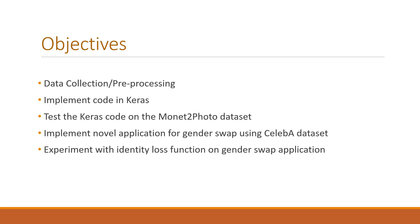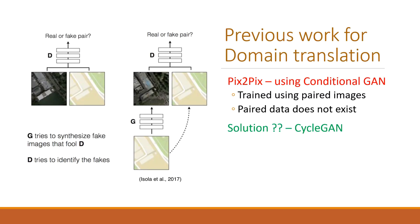In order to achieve our target, we start with collecting data from the CelebA dataset. Next we program our code in Keras. After that, we test it on the Monet-to-photo dataset on which previous work has been done. We use the same model for our application and experiment with the identity loss function to improve results.